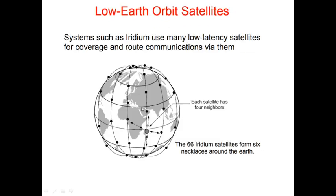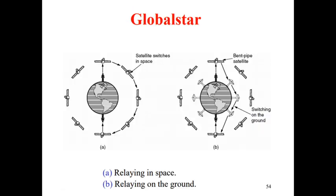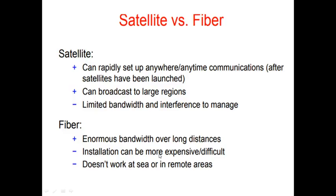Another system is Globalstar, where satellites switch in space — rotating around the Earth. There are two approaches: relaying in space and relaying on the ground. Sometimes the relay could be facing on the ground. Next we compare satellites versus fiber optical cables.